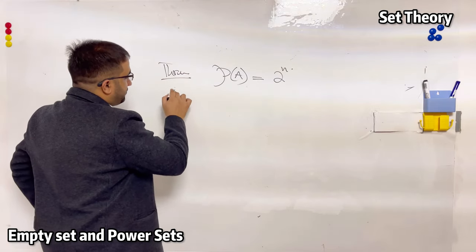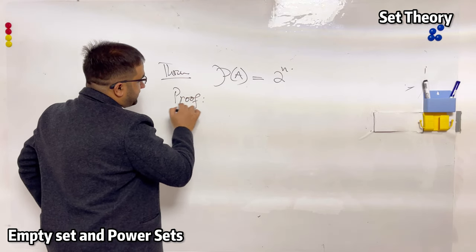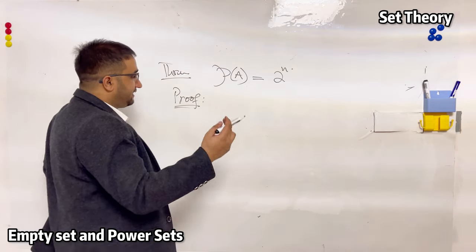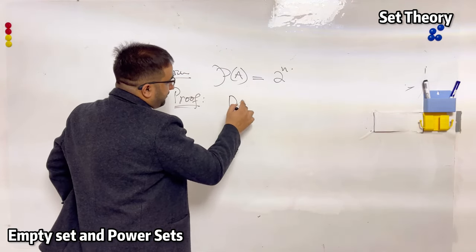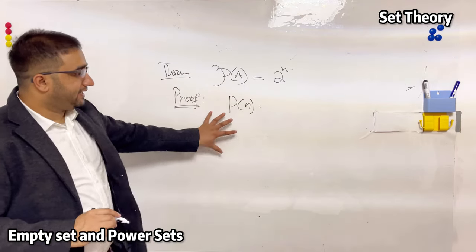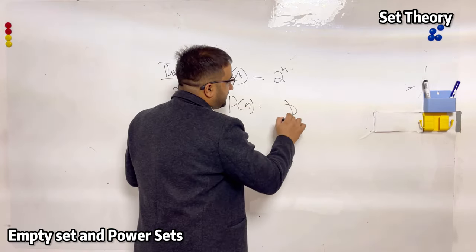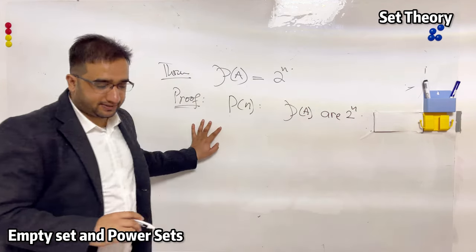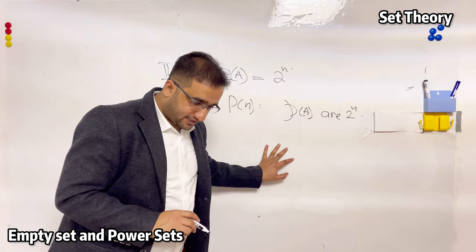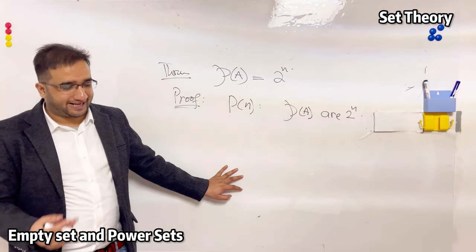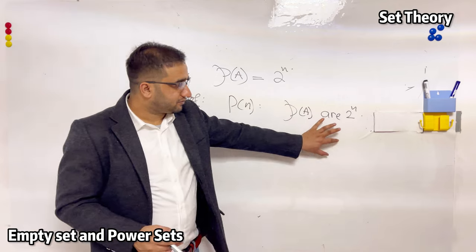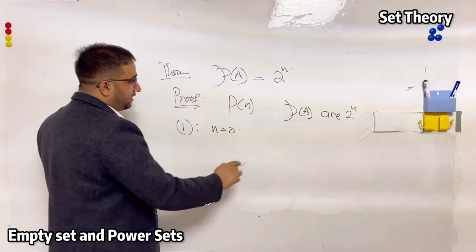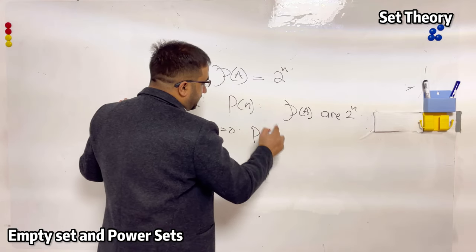To prove this, since there is an n involved, we will use mathematical induction. The statement P(n) is: the power set of a set A with n elements has 2 raised to the power n subsets. The first step in mathematical induction is to prove P(0), i.e., when n equals 0.